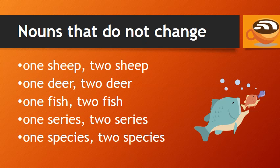Some nouns do not change — their singular and plural forms are the same. For example: one sheep, two sheep; one deer, two deer; one fish, two fish; one series, two series; one species, two species.